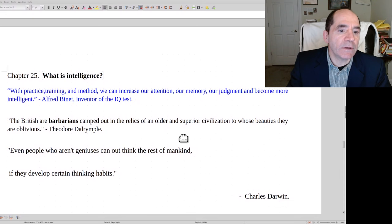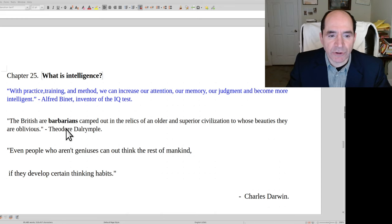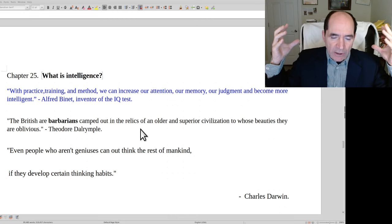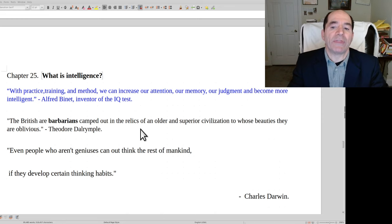The next one is Theodore Dalrymple. He says the British are barbarians camped out in the relics of an older and superior civilization to whose beauties they are oblivious. What I get from that is you don't want to go with the herd. The average person is just shaped by their environment. But if you ever want to be really excellent, you have to try to develop your mind and your understanding of things so you can perceive them in an objective way.